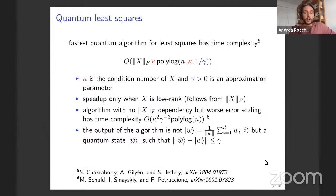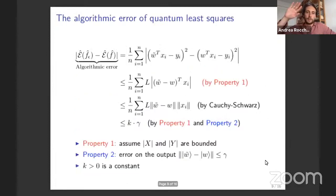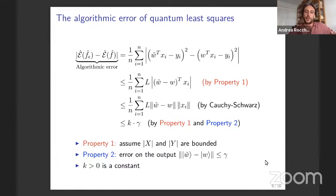The output of both algorithms is not a classical encoding of the parameter w but a quantum state w-tilde, close in some norm to the true label — meaning we're approximating, not getting the exact value. Now let's compute the algorithmic error for quantum least squares. Using only the assumption that X and Y are bounded and a Cauchy-Schwarz argument, we can bound the algorithmic error in terms of a constant K and the parameter gamma from the previous slide.